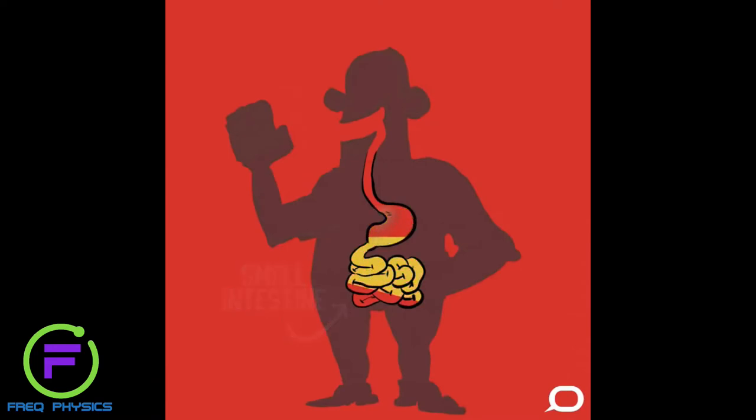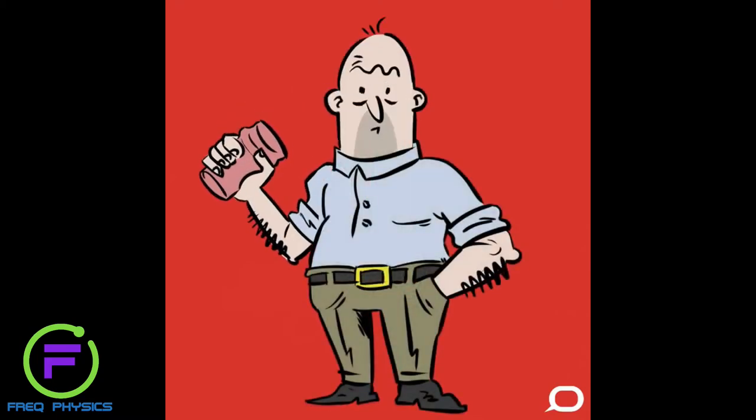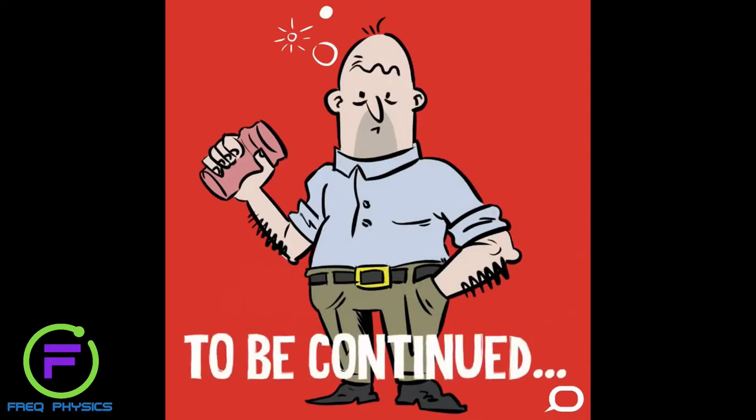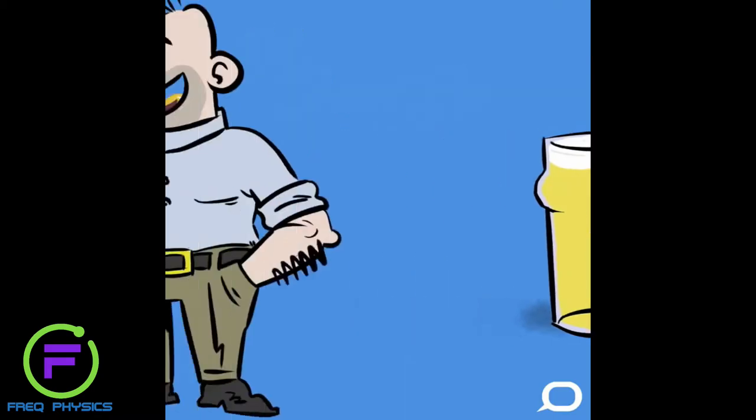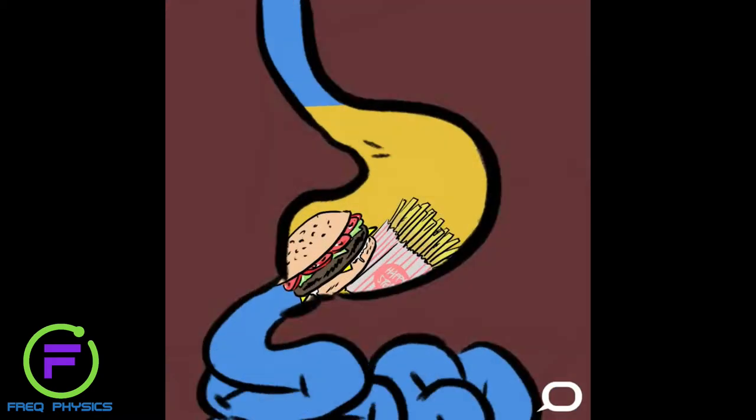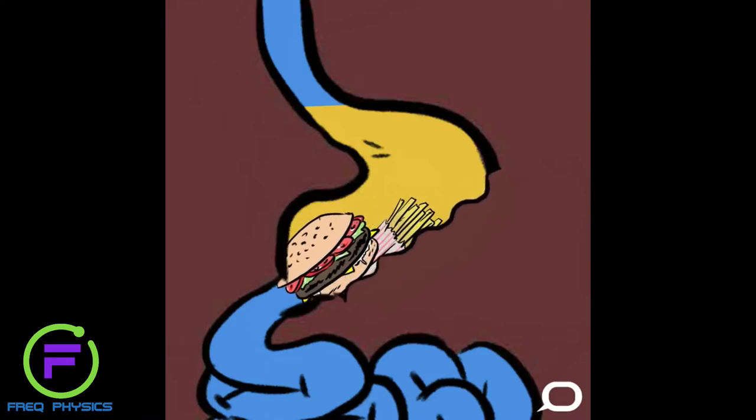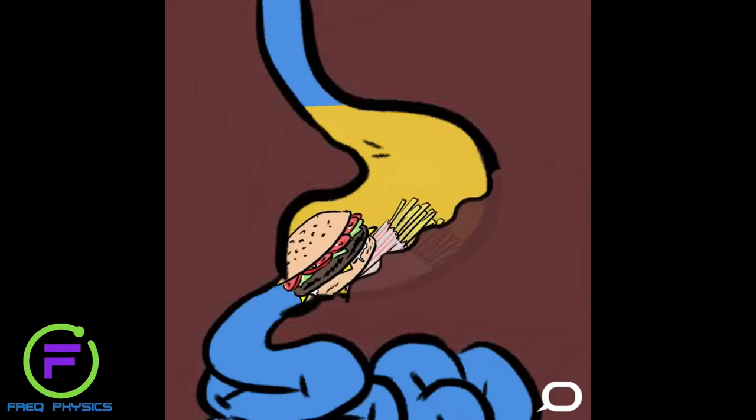When you take your first sip of, say, beer, it ends up in your stomach. What happens next depends a lot on whether you've eaten or not. If you have eaten, the alcohol is effectively trapped in your stomach while it works to break up the solid food. Alcohol can be absorbed into the bloodstream through your stomach, but this happens relatively slowly.